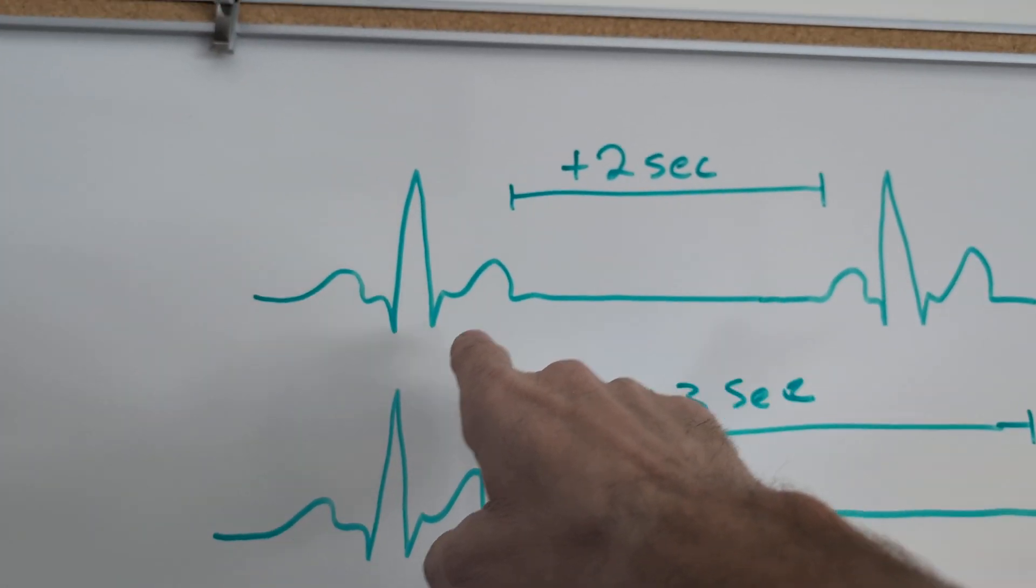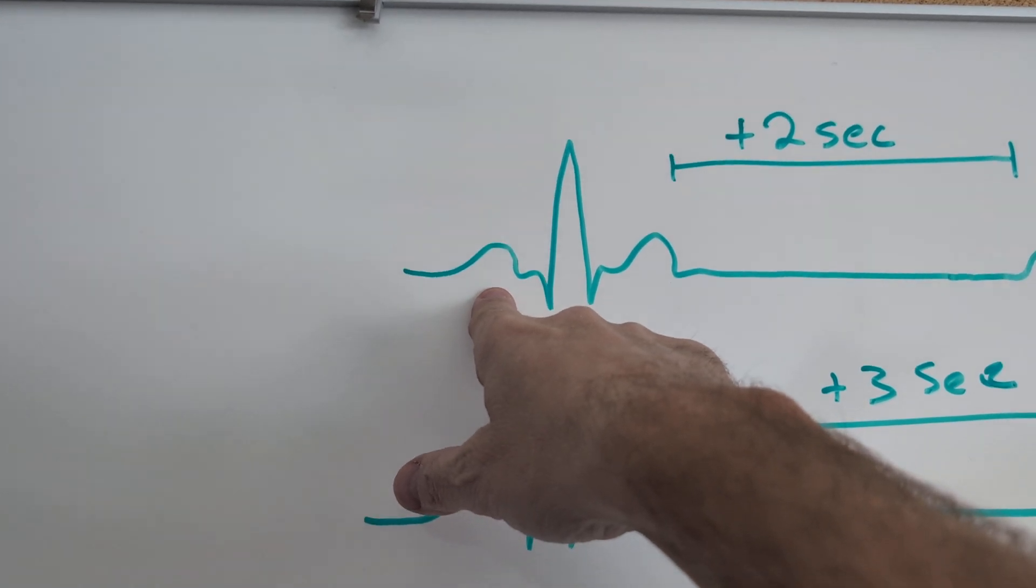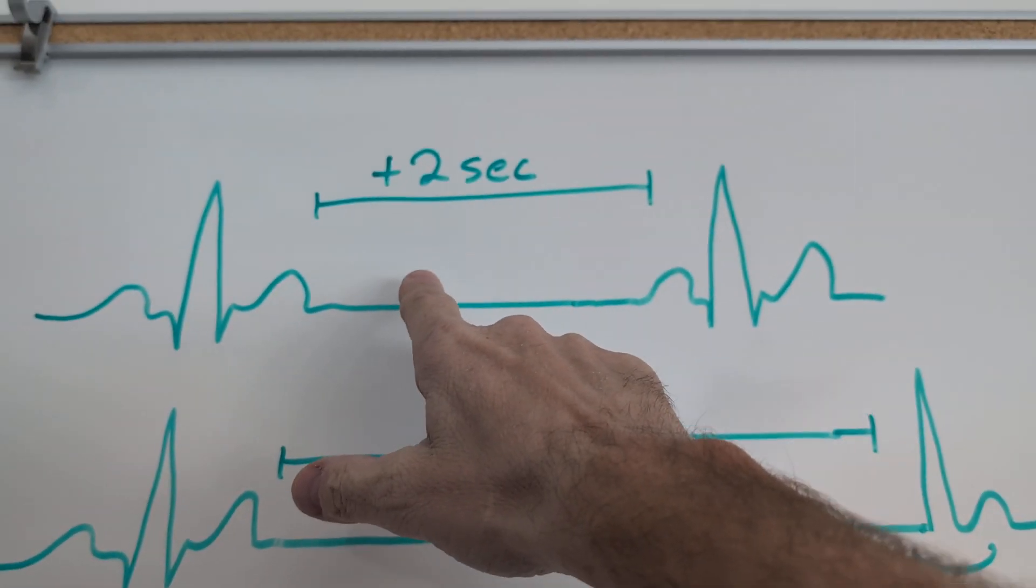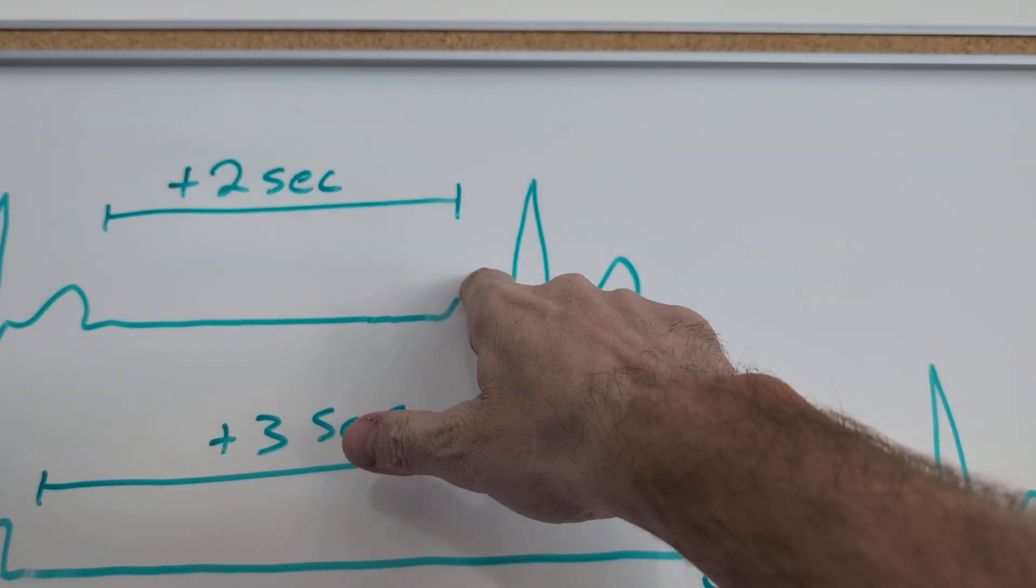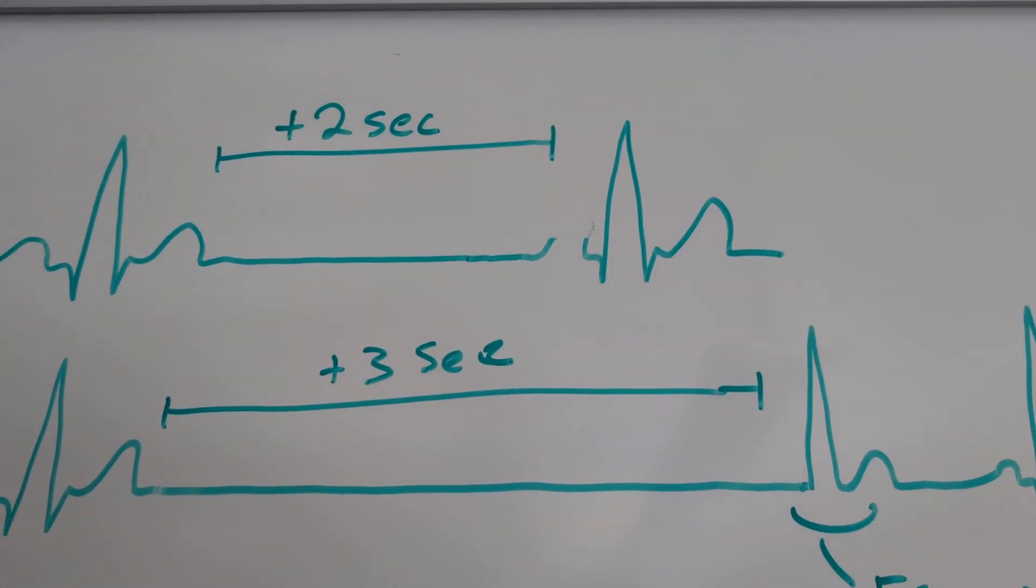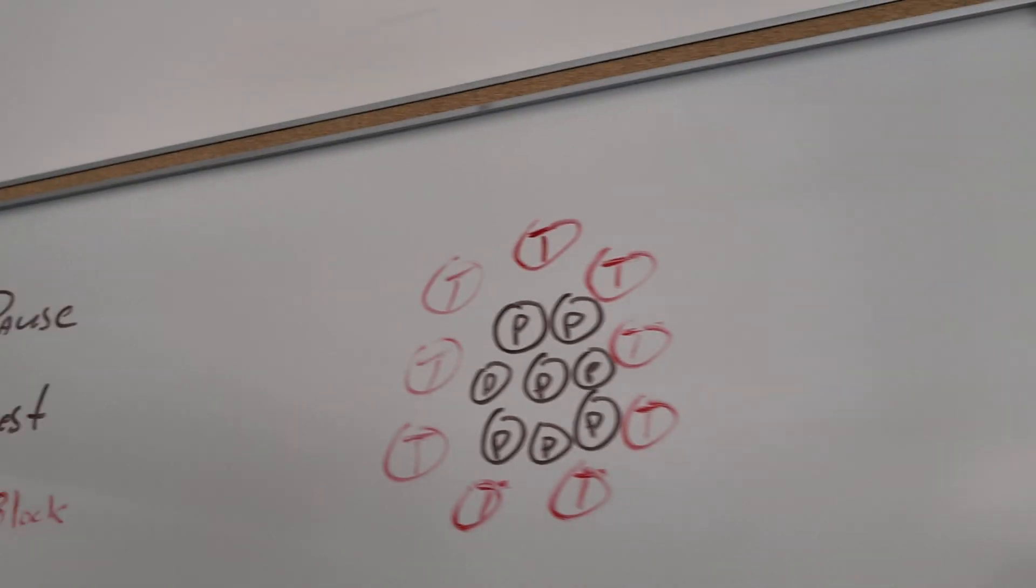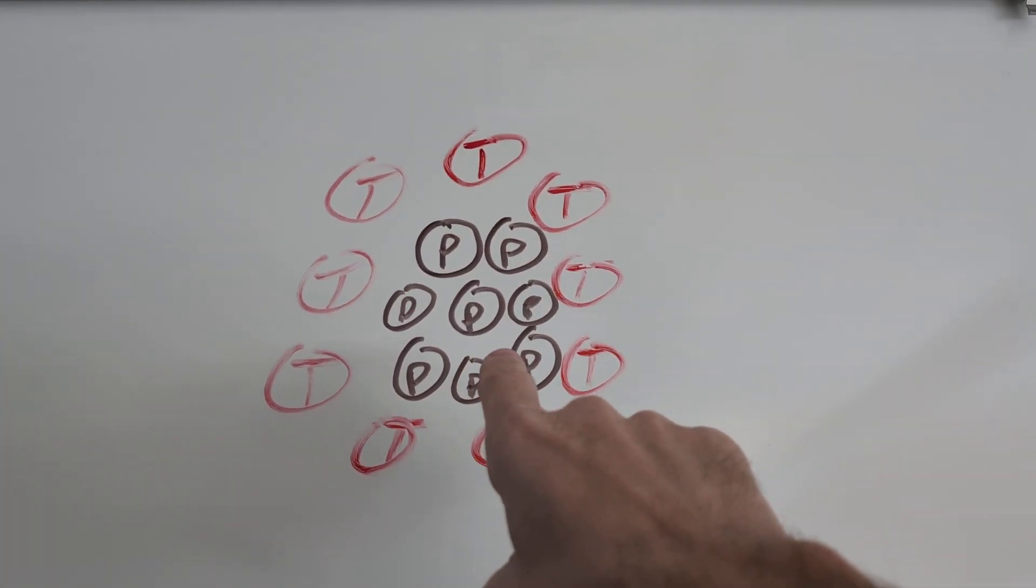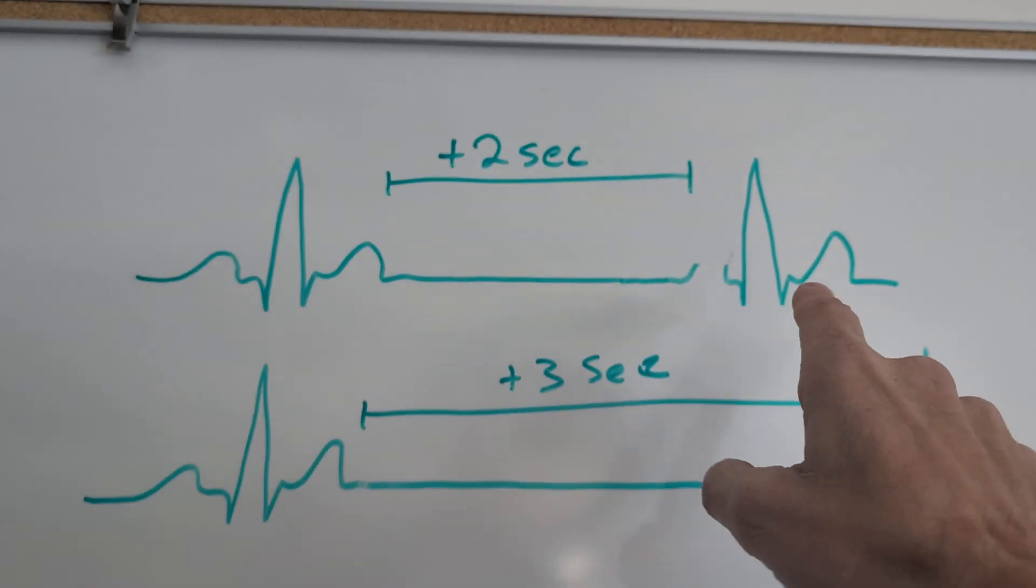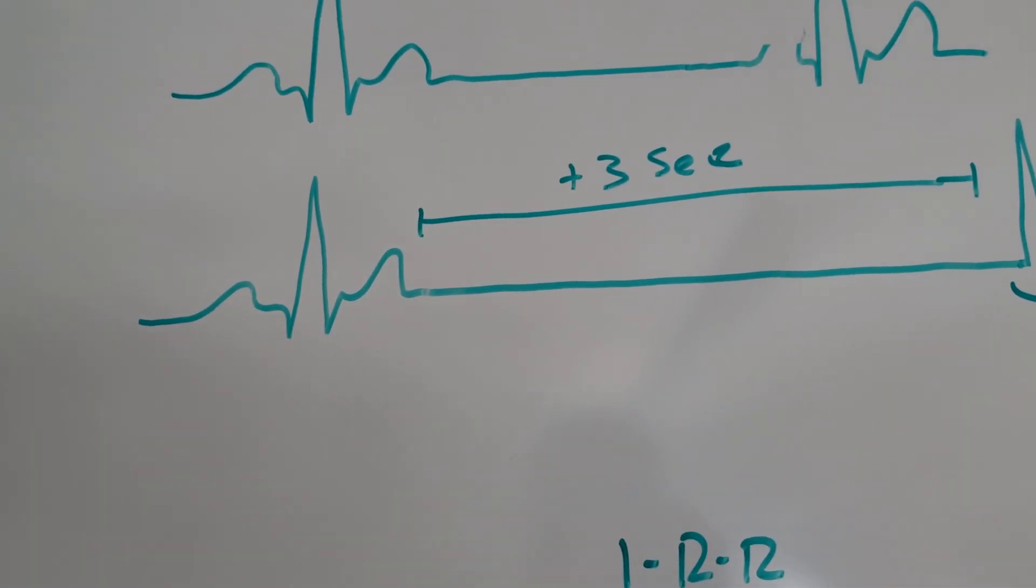And the sinus node is going to fail to fire for a period of time greater than two seconds. So you're going to have a pause that is going to be greater than two seconds. And if that pause, that failure to fire, is greater than three seconds, we call that sinus arrest.